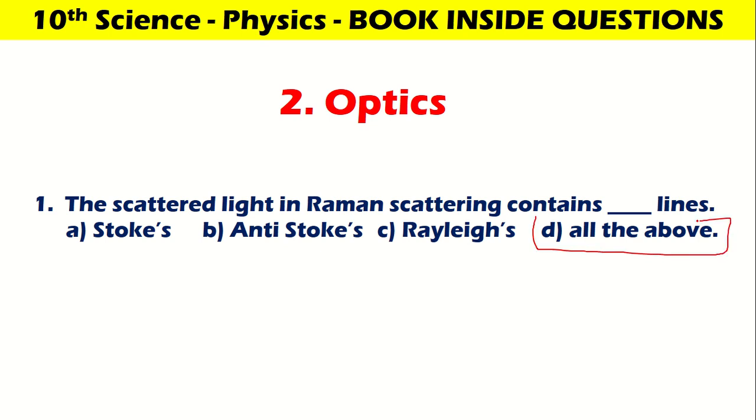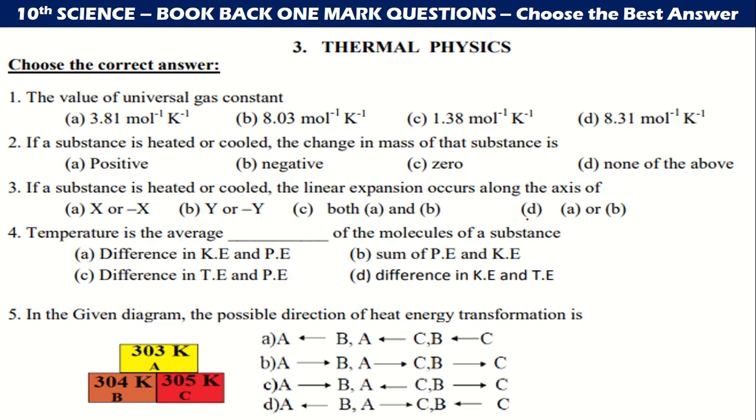Let us go to next one, thermal physics. Choose the correct answer. The value of universal gas constant is 8.31 mol⁻¹ K⁻¹. If a substance is heated or cooled, the change in mass of that substance is zero. If a substance is heated or cooled, the linear expansion occurs along with the axis, so D, A or B is the correct answer.